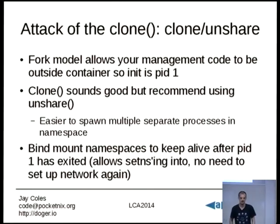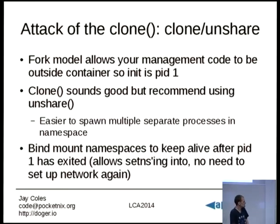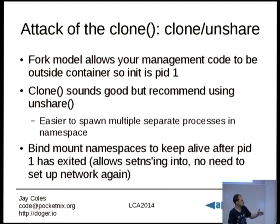This fork model is nice: if you've done anything with forking and writing daemons, you know how to track processes and wait for them to exit. Because a container is just a forked process, you can call waitpid on it and get its exit code. I recommend using unshare rather than clone because it's easy to spawn multiple separate processes in the same namespace — every time you call clone you get a new namespace. What I've found is I tend to launch init into the namespace and then freeze it before it starts, then run a whole lot of programs to set up the container. Unshare is a bit easier to do that with.